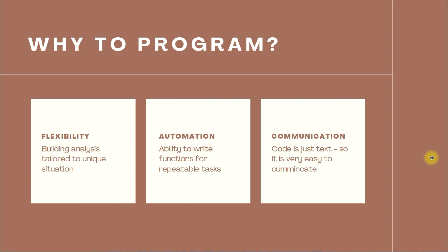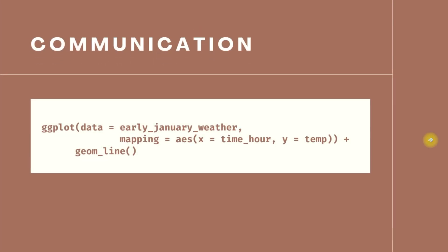The third part is communication. Let me show you a piece of code. Is this piece of code easy to communicate, even to someone who doesn't understand data science? It is quite intuitive — you can tell by looking at the code that this is something to do with data visualization. You have data called early January weather, and this data needs to be plotted. On the x-axis you have time hour, on the y-axis you have temperature, and you are going to plot this data with the help of a line graph. This kind of textual code really helps in explaining things to others, especially how the analysis is carried out, what steps are involved, and what visualizations you used.